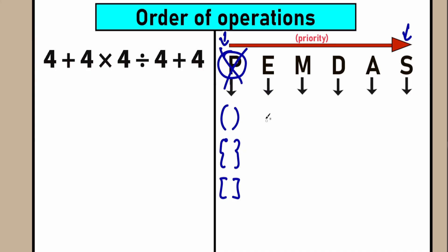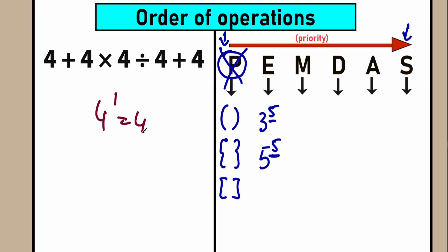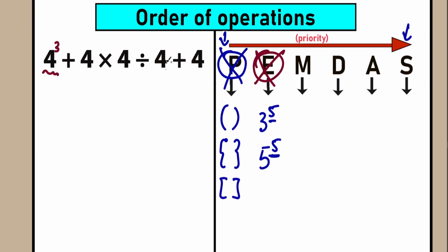What about E — exponents? That's basic powers, like 3 to the power 5 or 5 to the power 5. In our question, we don't have any powers — everything is to the first power, and 4 to the power 1 equals 4, so we can skip this part. But for example, if you had 4 cubed, you'd need to evaluate that — 4 cubed equals 64. Since we don't have exponents, we move on to the next step.